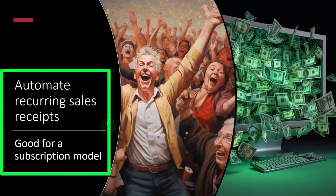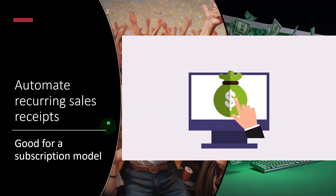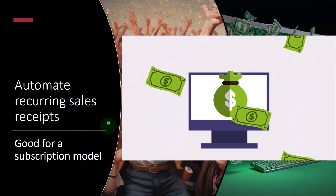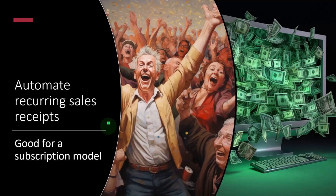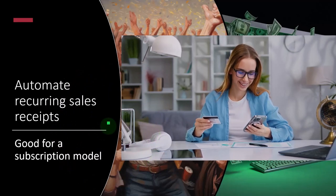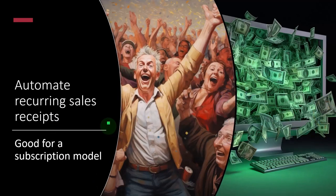Next, we have automating recurring sales receipts. You might have a situation like a subscription model where you're billing people every month. You could try to schedule invoices each month, but if you can get agreement from the client to simply pay you automatically, you can skip the invoicing and accounts receivable process and set up an automatic payment. This is a great system for subscription-based businesses so you don't have to go through the billing process every month.